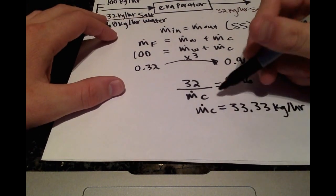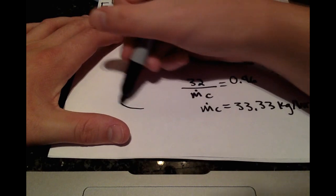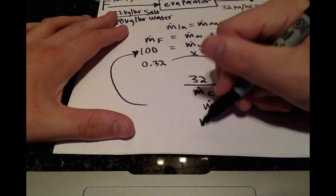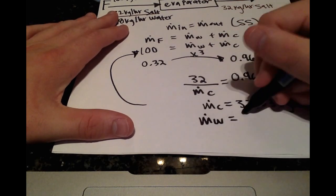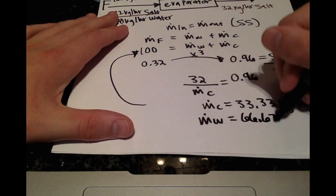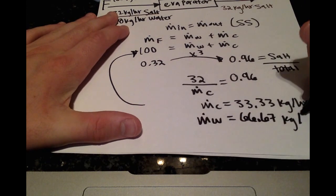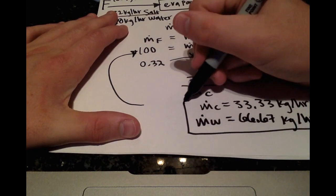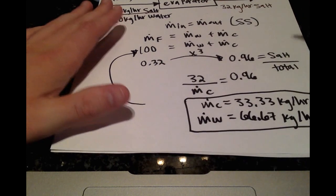And then, with this, we can plug that back into the equation we had up here. And that means the mass flow rate of water must be 66.67 kilograms per hour. So we've answered the question and found the two mass flow rates that they asked for.